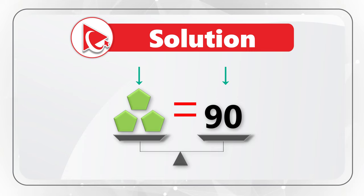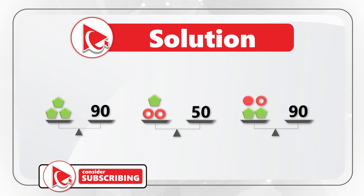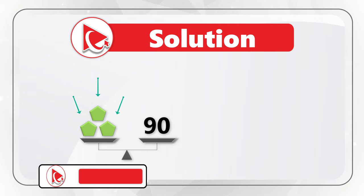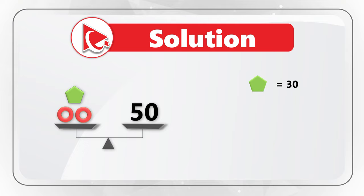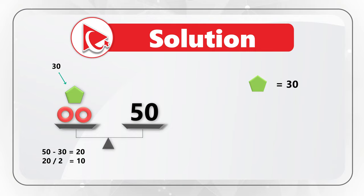You see shapes on the left of the scale and the number on the right, which means that the combination of shapes is equal to the number. To solve the problem, you need to go from scale to scale and calculate the shape's value. Let's start with scale one. It has three pentagons on the left and number 90 on the right, which means that each pentagon has a value of 30. The second scale contains one pentagon and two bagels, and the combination of these shapes equals number 50. We already know the value of pentagon, which is 30. All we need to do is divide the remainder of the calculations — 50 minus 30, which equals 20 — by 2, because there are two bagels, and calculate the value of bagel, which is 10.